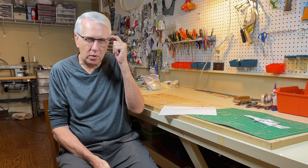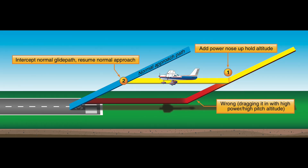Probably the most common error with RC models is being low on your approach — you never want to be low on your approach. We've talked about stabilized approaches at the correct approach angle. If you feel you're going to be low, simply add power to level off slightly, intercept your normal glide path, then continue a stabilized approach to landing. We just want to avoid low drag-in approaches.